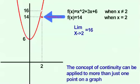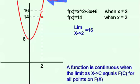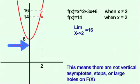The concept of continuity can be applied to more than just one point on the graph. A function is continuous when the limit as x approaches c equals f of c for all points on f of x. This means there are no vertical asymptotes, steps, or large holes on f of x.